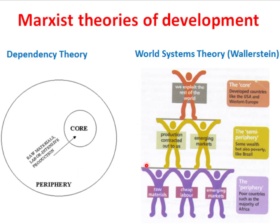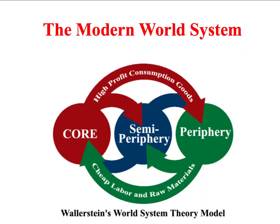World Systems Theory is very similar to Dependency Theory, but it also suggests that there is a third group of countries called the semi-periphery, which is intermediate between the rich core and the periphery of poorer nations. World Systems Theory argues that the capitalist economic system must be understood as a single system. Within this system, the world has been carved up into three unequal economic zones — the core, the periphery, and the semi-periphery — with the wealthier zones exploiting the poorer ones.